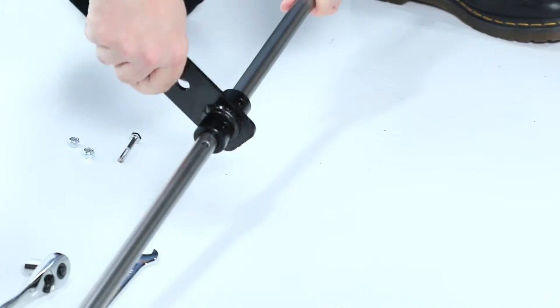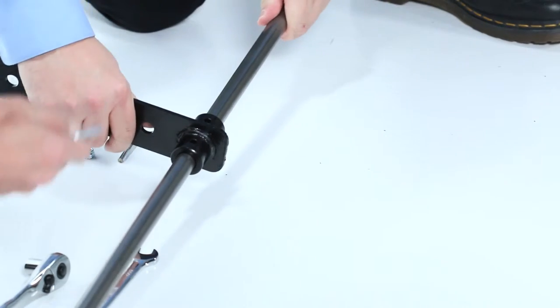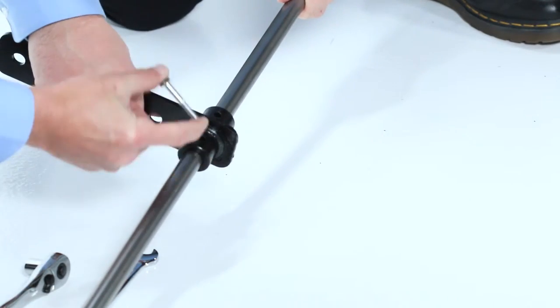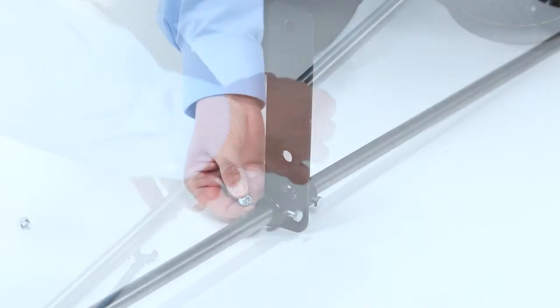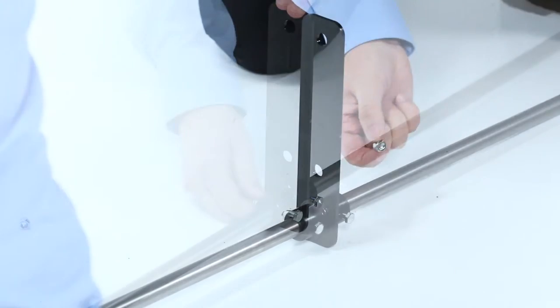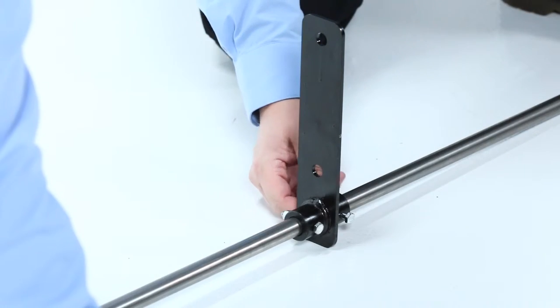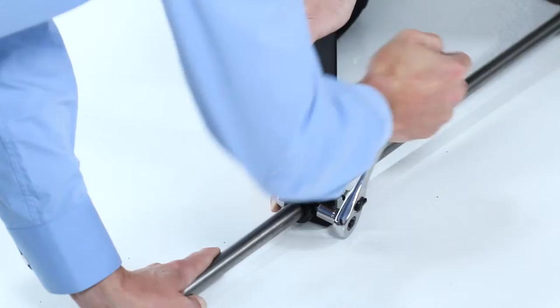First, attach the lift lever assembly part 8 to the two holes in the middle of the shaft part 10, with two hex bolts part B and nyloc nuts part K. Tighten the nuts securely.